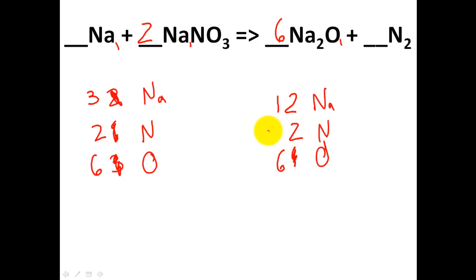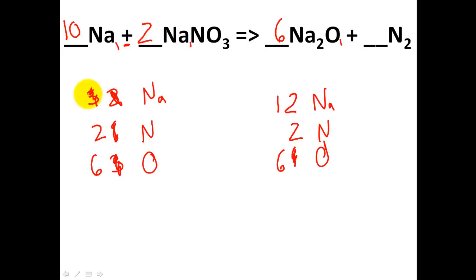Six times two gives me 12 sodiums on the product side. I need 12 sodiums on the reactant side but only have three. If I put a number in front, I'll affect nitrogens and oxygens too — but I don't have to. What plus 2 gives me 12? It's 10. Ten times one plus two is 10 plus 2, giving me 12 total sodiums. The law of conservation of mass is satisfied. Keep a good inventory and you should be fine.